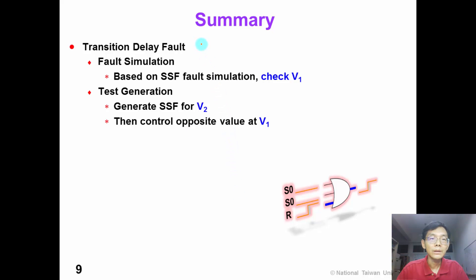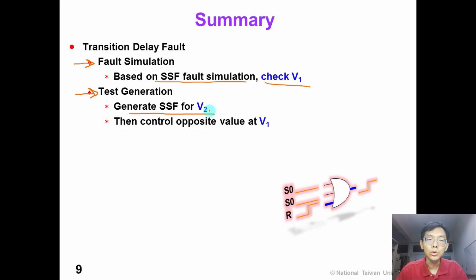In summary, in this video we have shown details about transition delay fault simulation, which is based on existing single stuck-at fault simulations. We first simulate the second vector and then check the value for the first vector. Also, we showed details about transition delay fault test generation, which can be based on existing single stuck-at fault ATPG. We first generate a single stuck-at fault pattern for vector 2 and then control the fault side to an opposite value for vector 1.